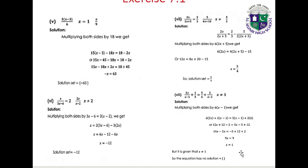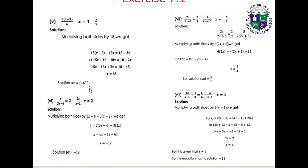Part 5: 5(x minus 3)/6 equals 1 minus x/9. Multiplying both sides by 18: 15(x minus 3) minus 18x equals 18 minus 2x, giving 15x minus 45 minus 18x equals 18 minus 2x. Solving: minus x equals 63, so x equals minus 63. Solution set: {-63}.